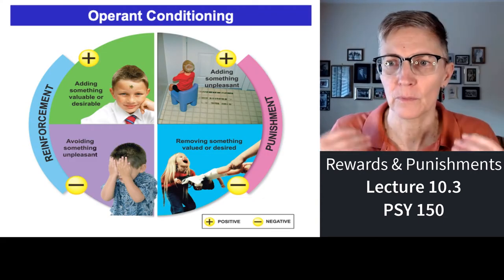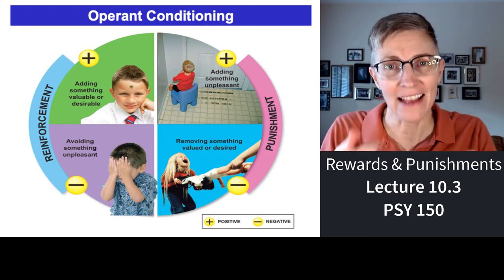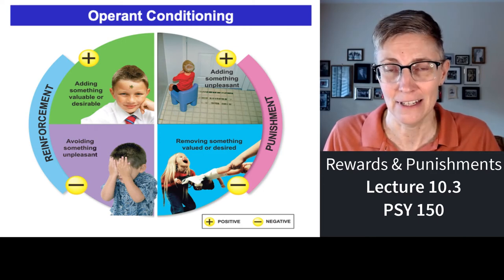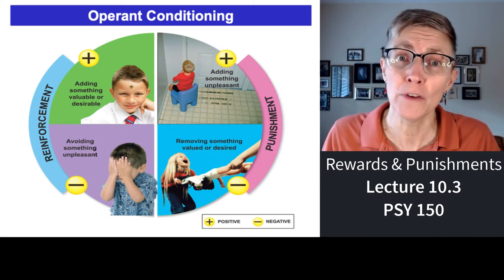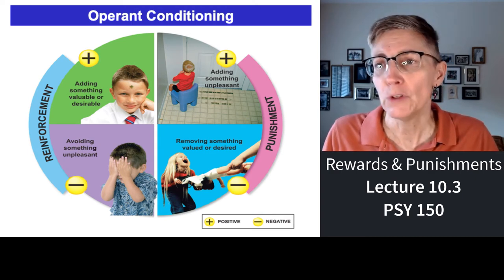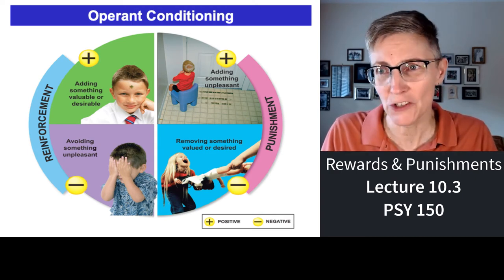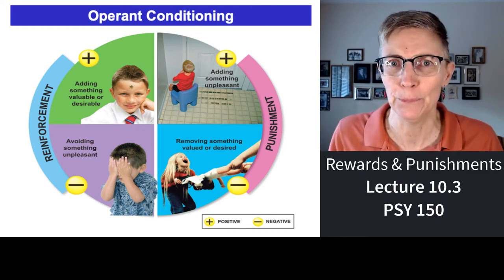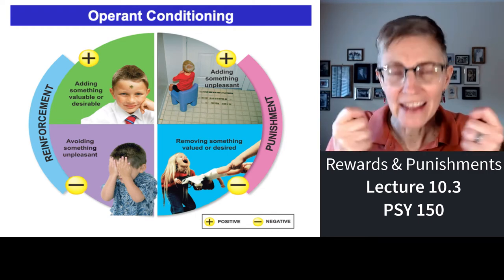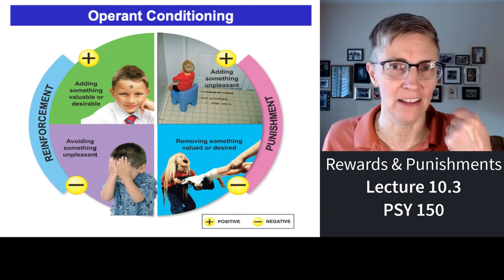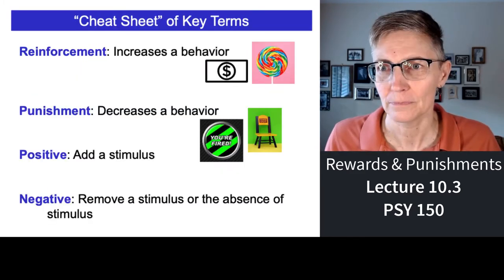Here are some examples. Reinforcers: you can add something nice — here's a gold star, Johnny — or you can take away something unpleasant, like now you don't have to go to suspension. You can also have a positive punishment where you add something unpleasant — timeout for you. Or a negative punishment where you take away something desired — no, you can't have that doll, that cell phone, or the car.